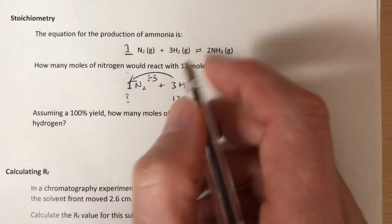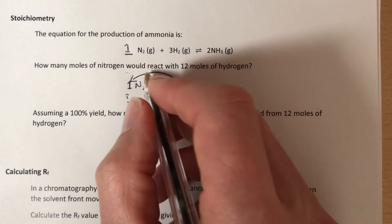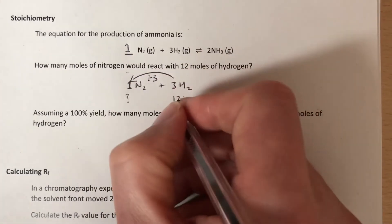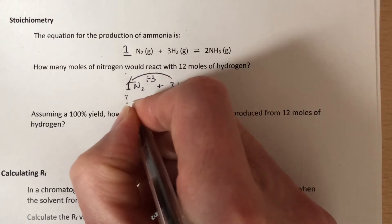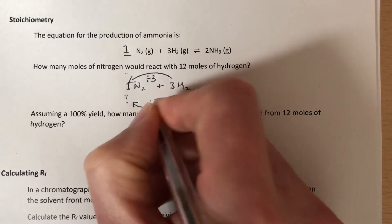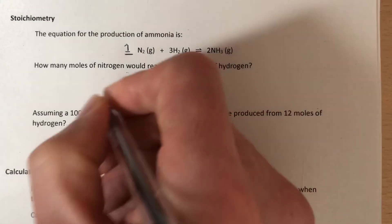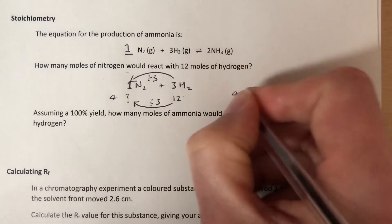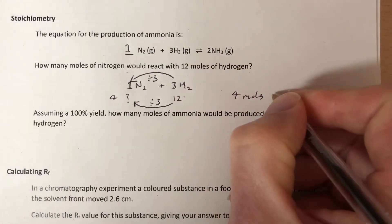We get from three to one by dividing by three. So we have to divide three by three to get one, so therefore we need to divide whatever we did to the three, we're going to have to do to the 12, we're going to write divide by three down here as well. 12 divided by three equals four, and so therefore it's four moles of nitrogen.